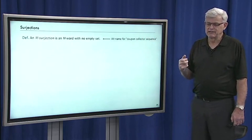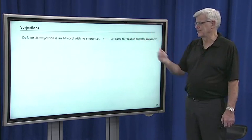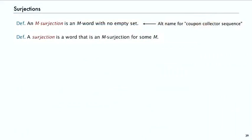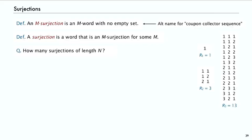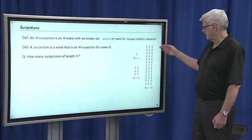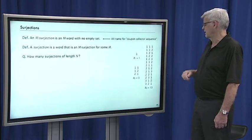Here are some other related combinatorial classes. Another name for a coupon collector sequence is an M-surjection. That's an M-word with no empty set. If we take off the constraint on M and just say it's a word that's a surjection for some M—there's some value of M such that it's a sequence of sets, none of which are empty for some size of the sequence—these are examples of surjections. How many surjections are there of length M? This one's all ones. This one's all ones and twos. And then the rest of them are ones, twos, and threes.